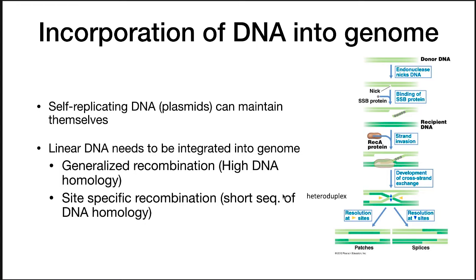There are two types of recombination for integration. There's generalized recombination, where you have high DNA homology — an identical or very similar region of DNA being brought in, like a trpA gene, that matches to that gene in the cell and then undergoes recombination. There can also be site-specific recombination, where short sequences of DNA homology are used to recombine the DNA in. What's important to know is that even linear DNA that comes into the cell can be brought in by recombination, and this actually uses the recombination repair system to put the DNA into the cell.